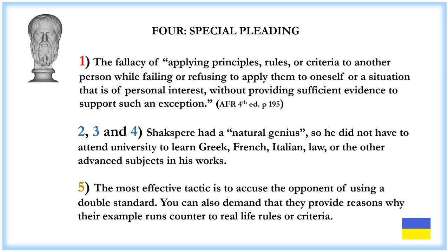Fallacy 4: Special Pleading. This is the fallacy of applying principles, rules, or criteria to another person while failing or refusing to apply them to oneself or a situation of personal interest without providing sufficient evidence to support such an exception. Since the 19th century, the argument has been: Shakespeare had a natural genius, so he did not have to attend university to learn Greek, French, Italian, law, or other advanced subjects in his works, nor know anything about courtiers and diplomacy. The most effective tactic to counter this is to accuse the opponent of using a double standard, and demand they provide reasons why their example runs counter to real-life rules or criteria.